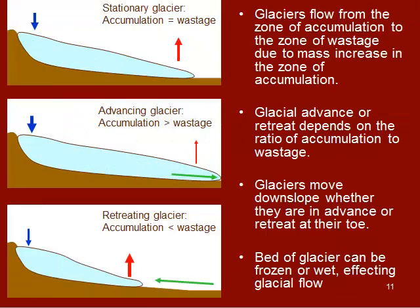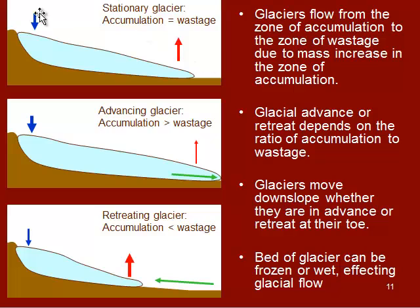How does a glacier increase and decrease in volume? A lot of that has to do with the mass balance of the ice. With a stationary glacier — one not advancing or retreating — the terminus stays in the same spot. Accumulation, the amount of snow input, equals the amount that is melting away. We still have internal flow from accumulation to ablation, but inputs and outputs are equal.